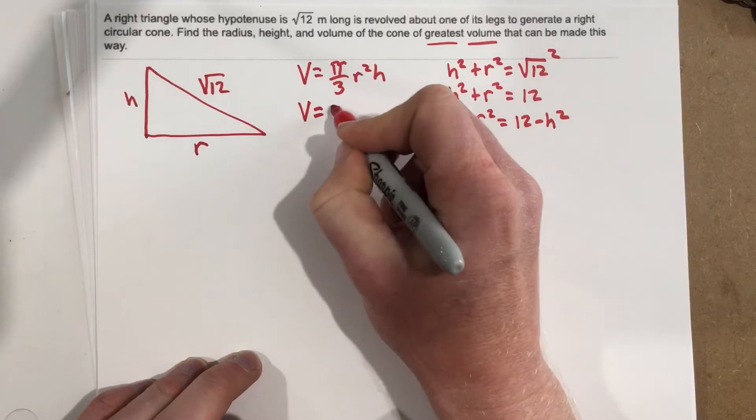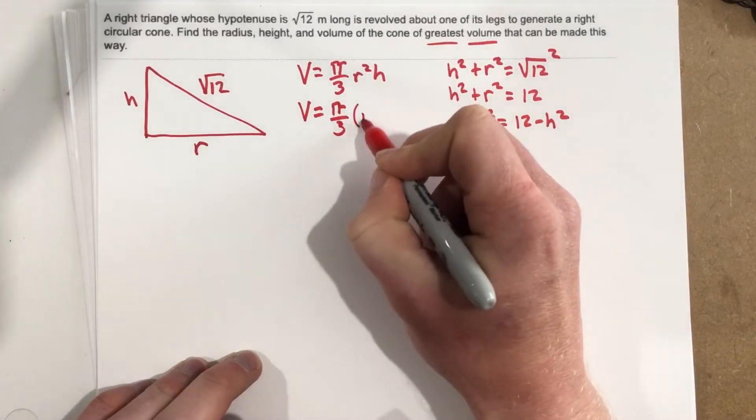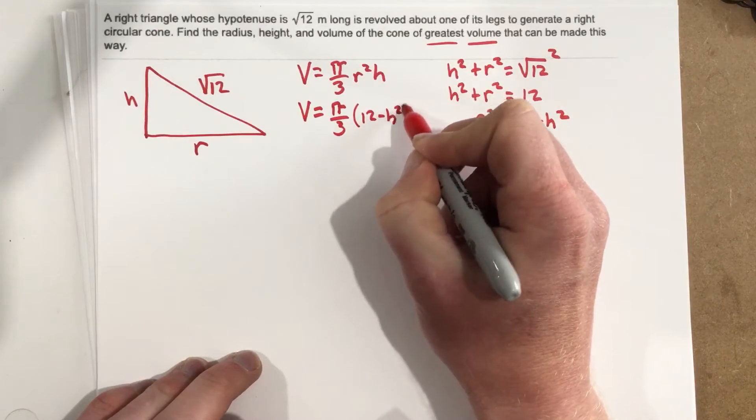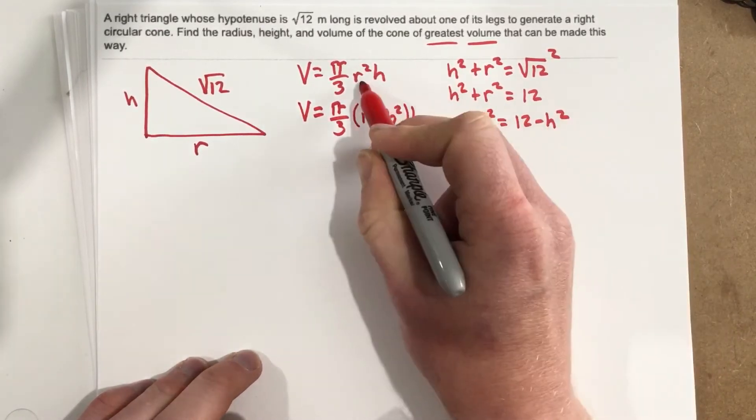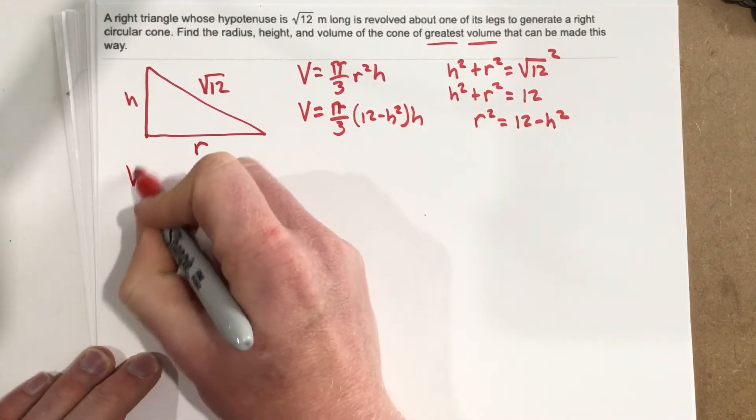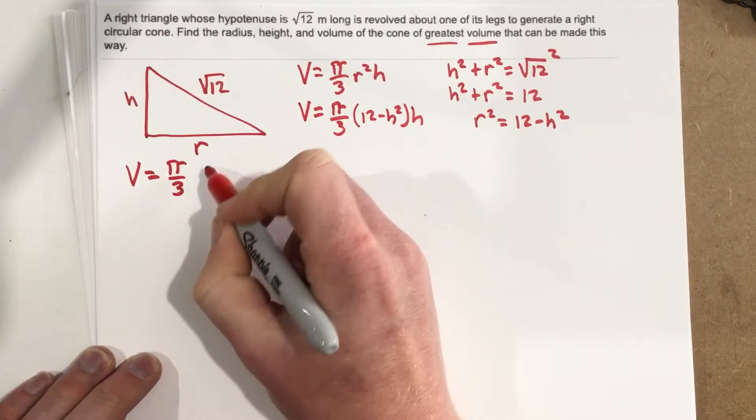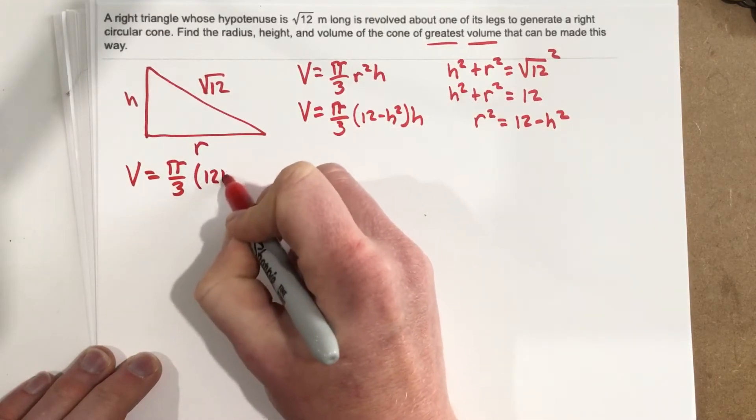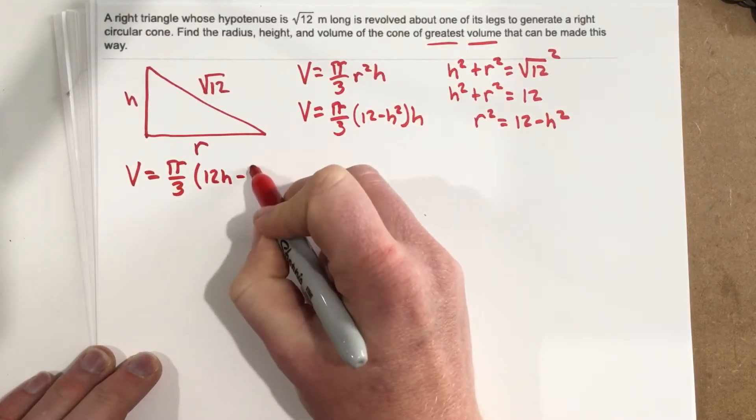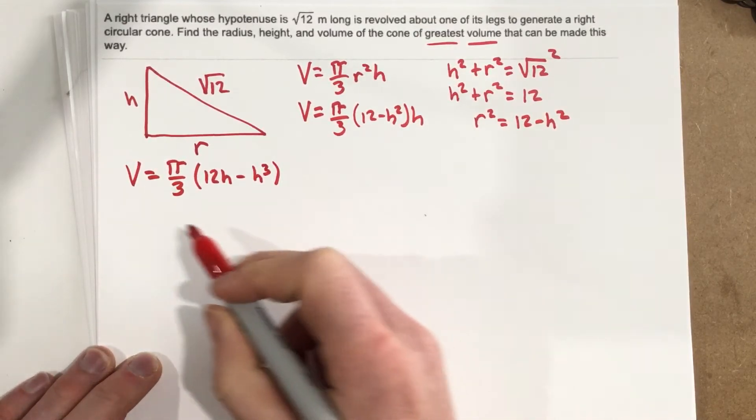So we end up with V = π/3 · (12 - h²) · h. We'll plug this in for r². Let's distribute that and I'm going to write that over here: V = π/3 · (12h - h³).